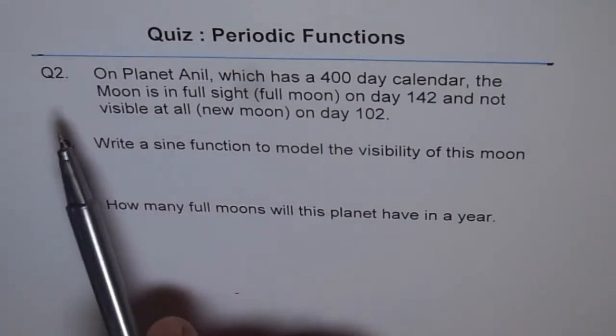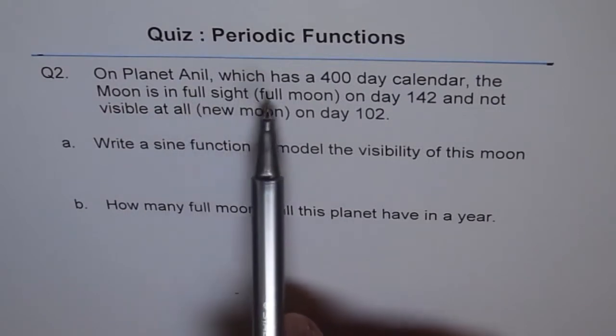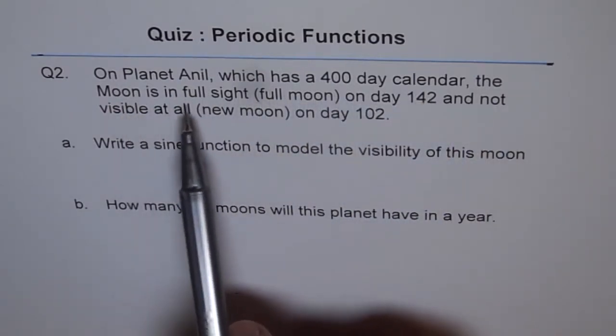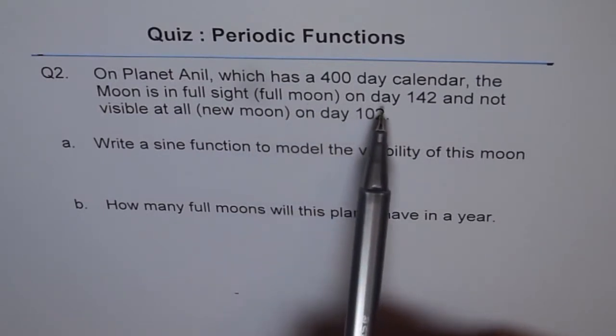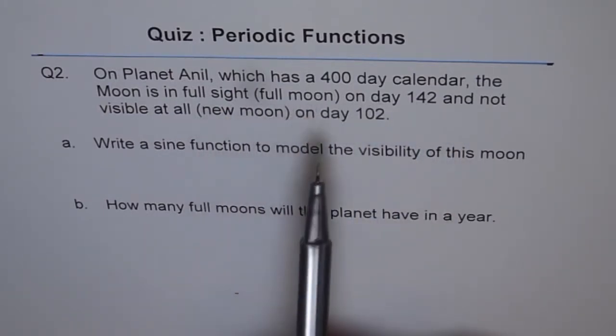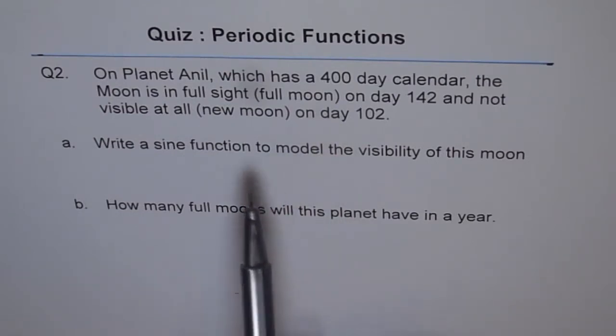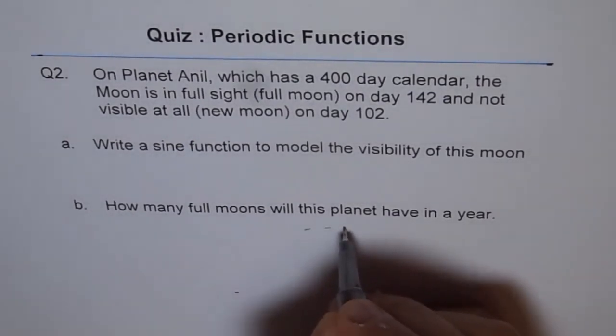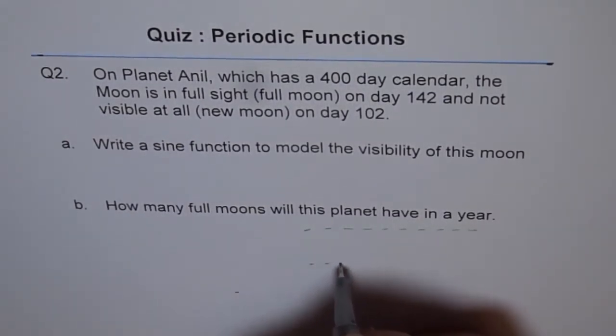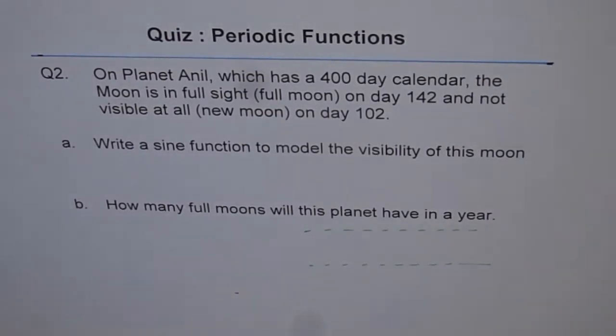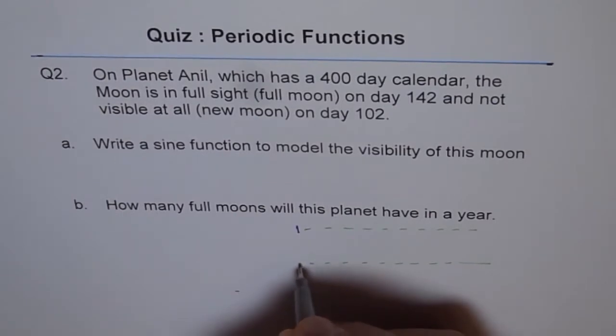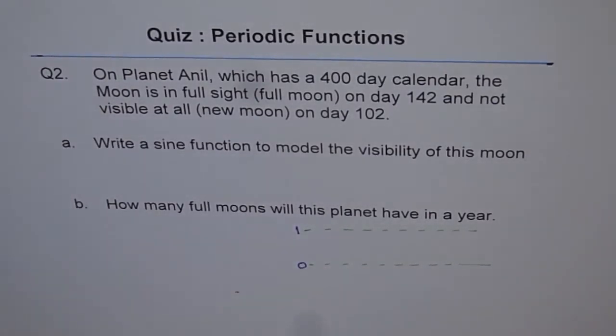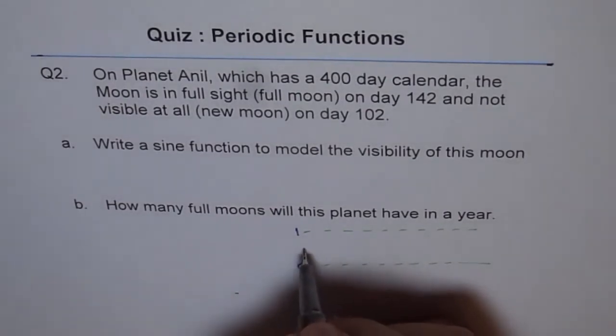Once again, question 2 is on planet Anil, which has a 400 day calendar, the moon is in full sight or full moon on day 142. So let's say full moon, you can say 1 for full moon. And not visible at all, let it be 0. So visibility of the moon can be your y value. So we will draw like here, we will make a sketch here.